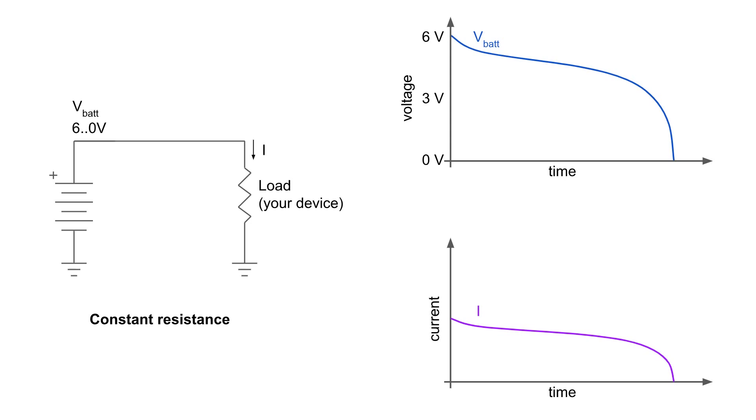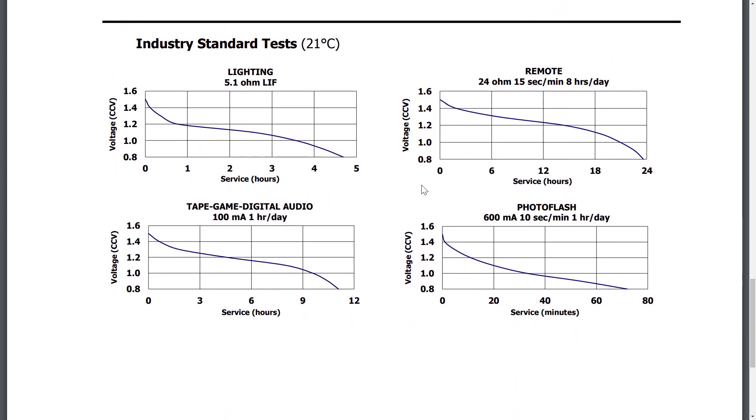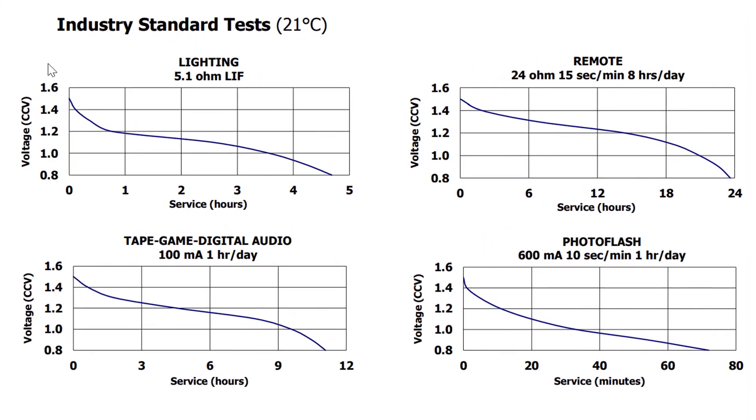The last load type we have not talked about yet is the constant resistance. This is useful for passive only type circuits, like a flashlight. As the voltage on the batteries drops, the current also drops. This makes it difficult to estimate battery life, because as the current changes, the capacity also changes. If you need to use this type of load, I recommend taking a look at the industry standard tests on the datasheet. They should offer a couple of plots with constant resistance loads to give you an idea of what kind of battery life you can expect.